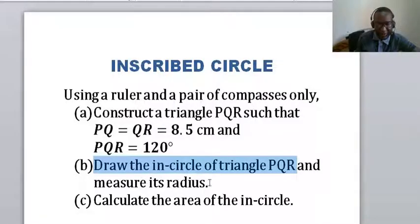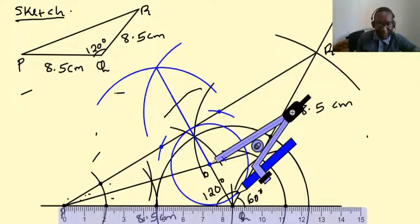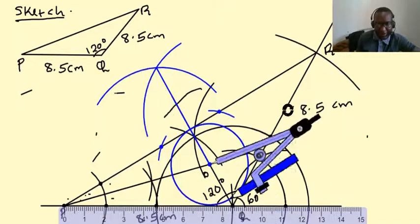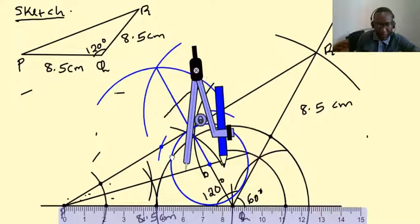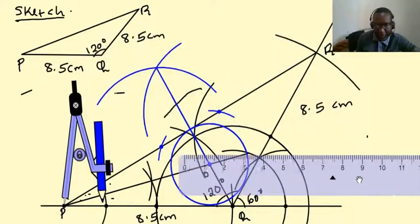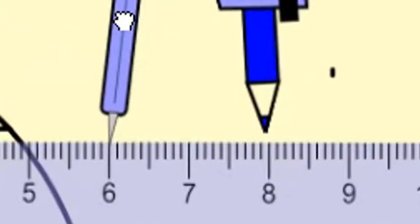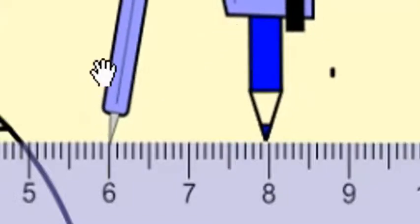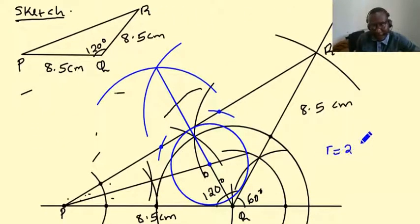Now we need to go ahead and measure the radius of the circle. So the radius of the circle is the radius of that compass there. So I'm just going to shift the compass onto this ruler and take the reading. So the radius there is two centimeters.